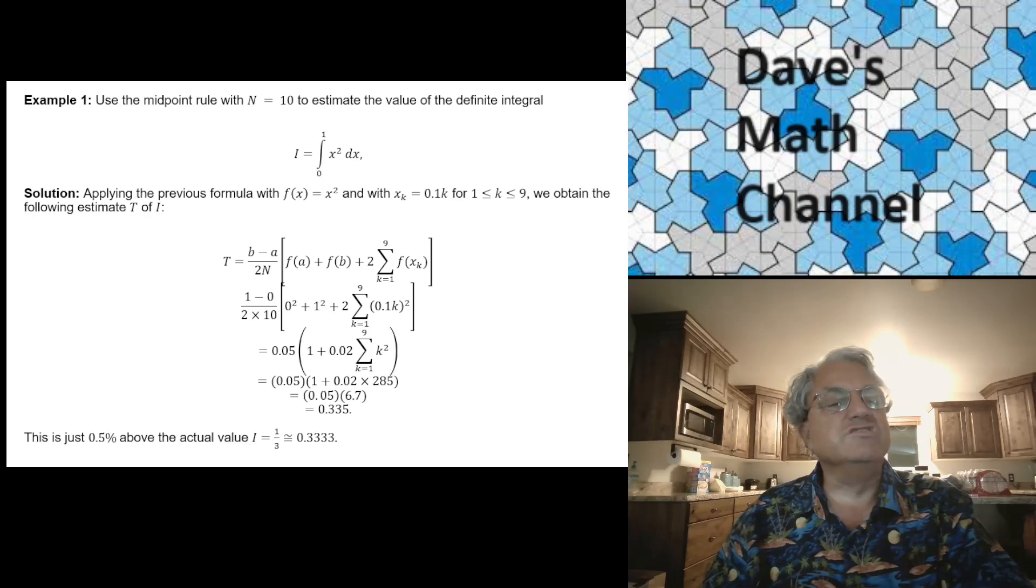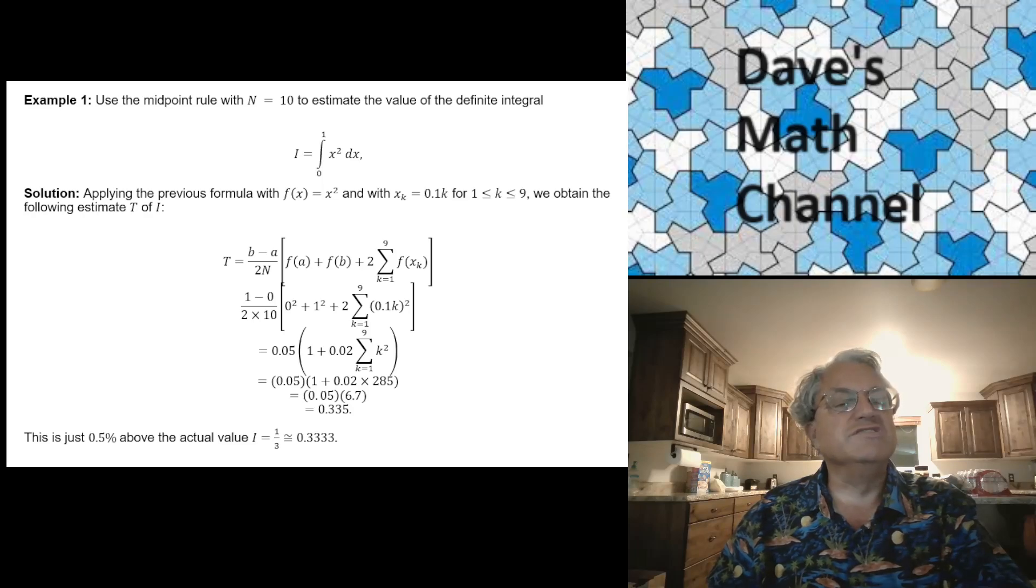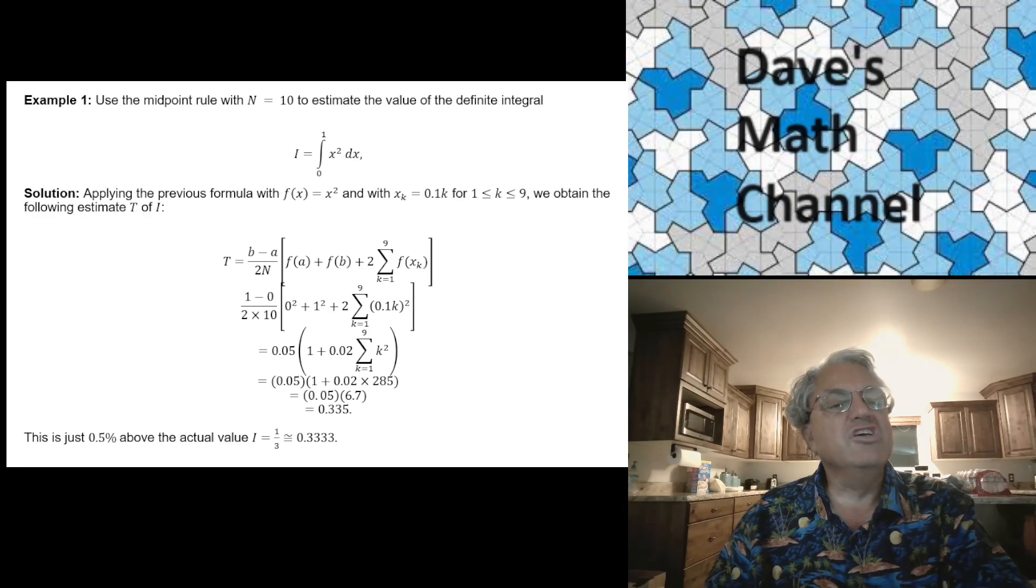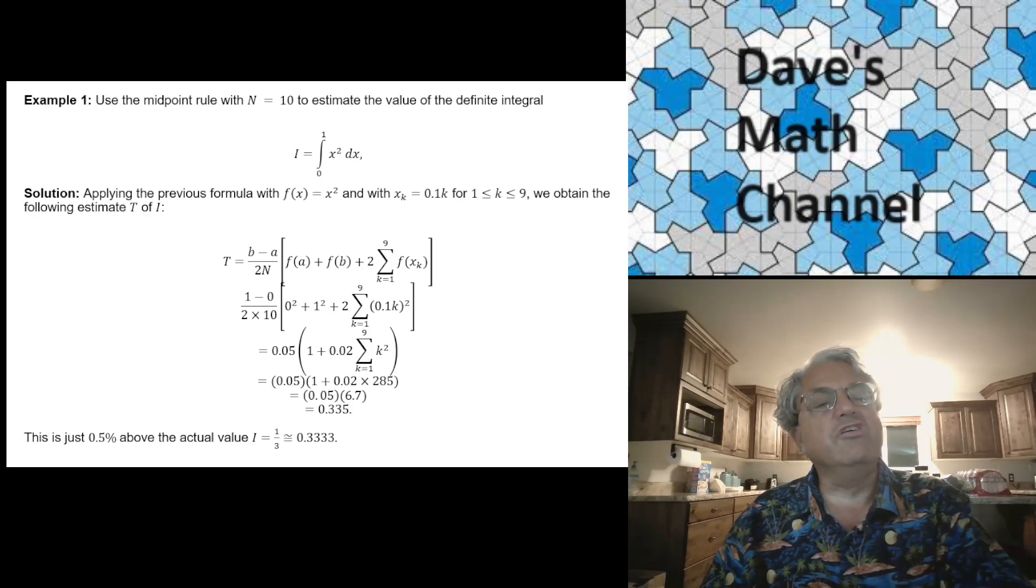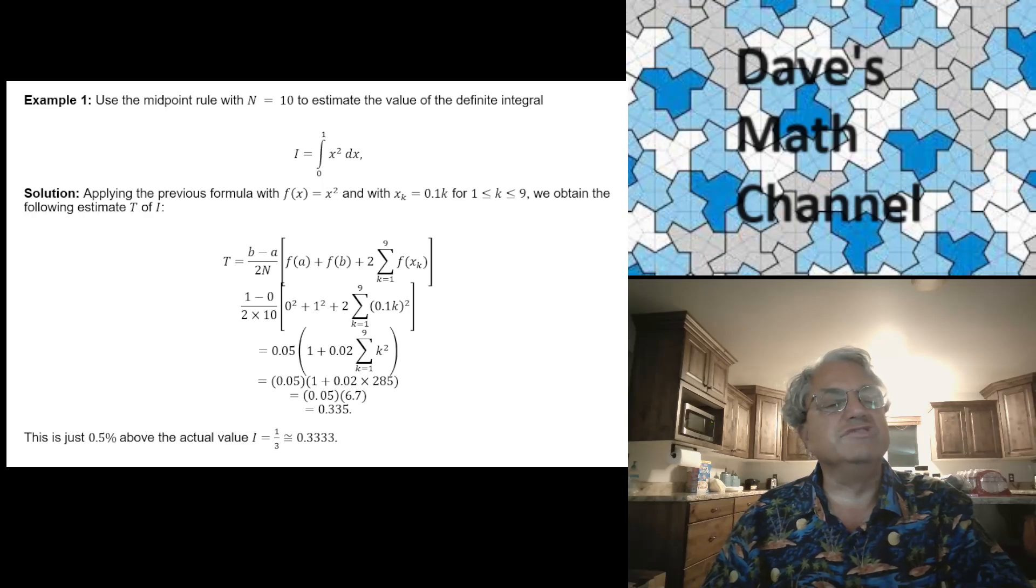And now we're approximating the parabola by a series of trapezoids. So let's see what we get if we apply this rule. So I just worked out the details on this slide. So let's start with a formula. I'm calling this area T. I guess T for trapezoid rule. So capital T is supposed to be an estimate of capital I. And we just apply the formula B minus A over 2 times capital N. Here, capital N is 10. A is 0. B is 1. So here, at the top line, just writing down the general formula.